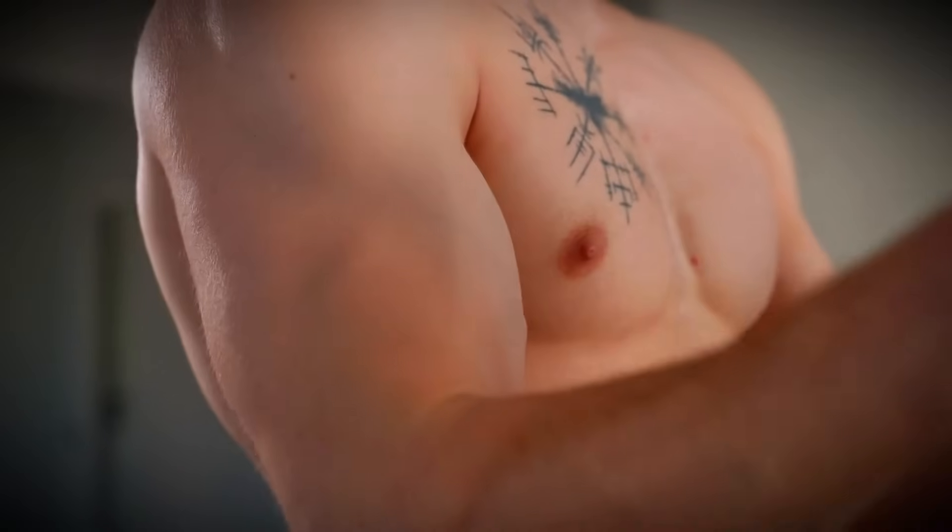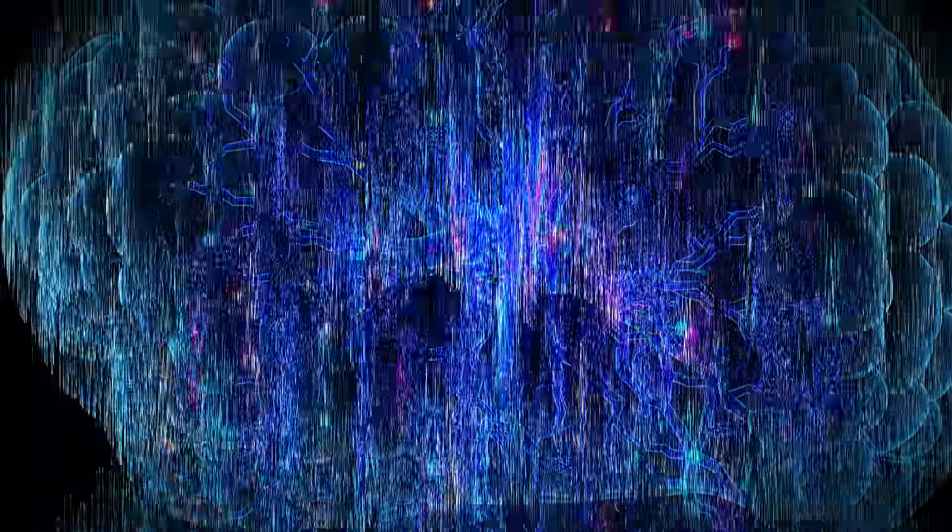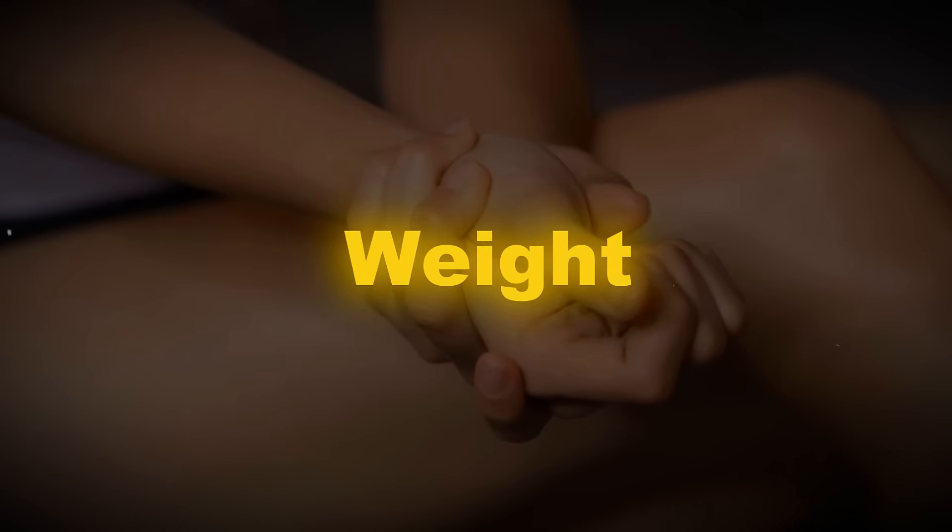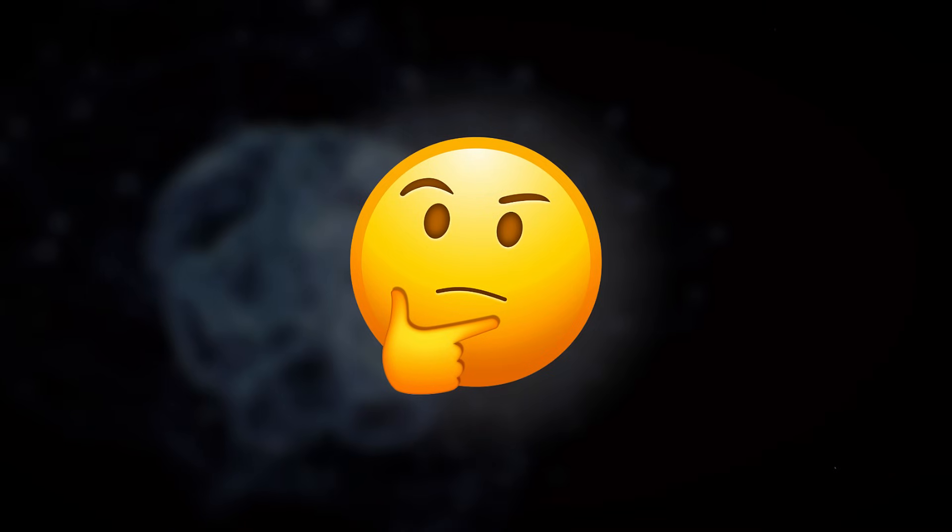Without these visual anchors, your brain resorts to a cautious, worst-case scenario strategy. It overcompensates, engaging more muscle. This increased neural effort translates directly into the sensation of greater weight. It's not heavier, but your brain thinks it has to work harder.